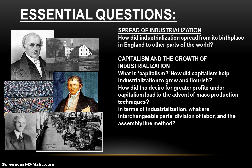Today we'll continue our story by examining how the Industrial Revolution spread and grew around the world. Let's take a look at those essential questions. We'll start with the spread of industrialization — how did industrialization spread from its birthplace in England to other parts of the world? Then we'll look at an economic system called capitalism, and how it provided the perfect environment for the growth of industrialization.